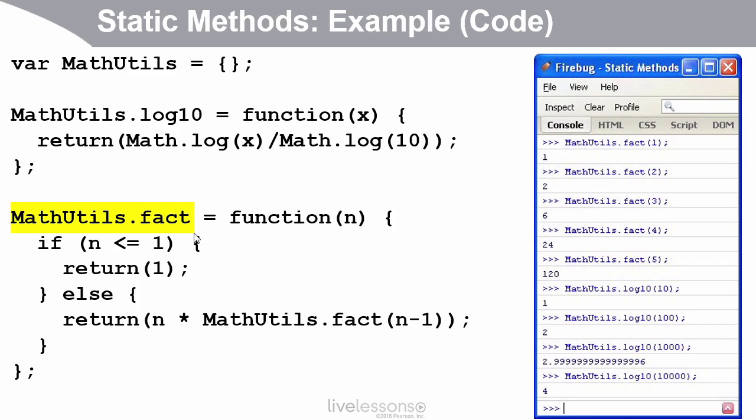But there's also a recursive approach. You say, the factorial of one is one, and the factorial of any larger whole number is that number, say five, times the factorial of the next smaller number, four.